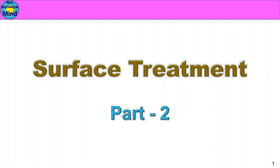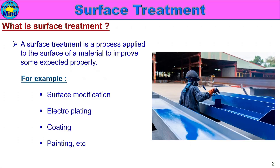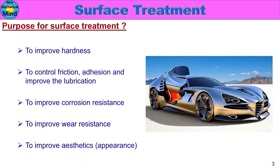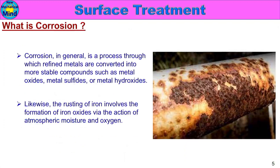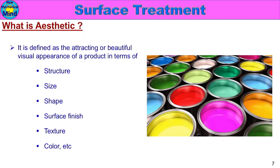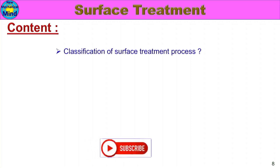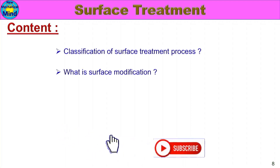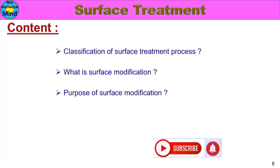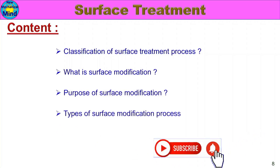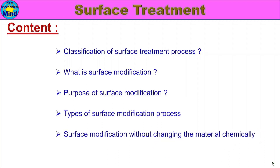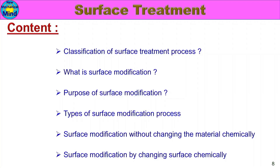For Part 1, click on the link above. In Part 1, we covered: what is surface treatment, the purpose of surface treatment, what is friction, what is corrosion, what is wear, and what is aesthetic. In Part 2, we will cover the classification of surface treatment process, what is surface modification, the purpose of surface modification, and the types of surface modification process — including surface modification without changing the material chemically, and surface modification by changing the surface chemically.